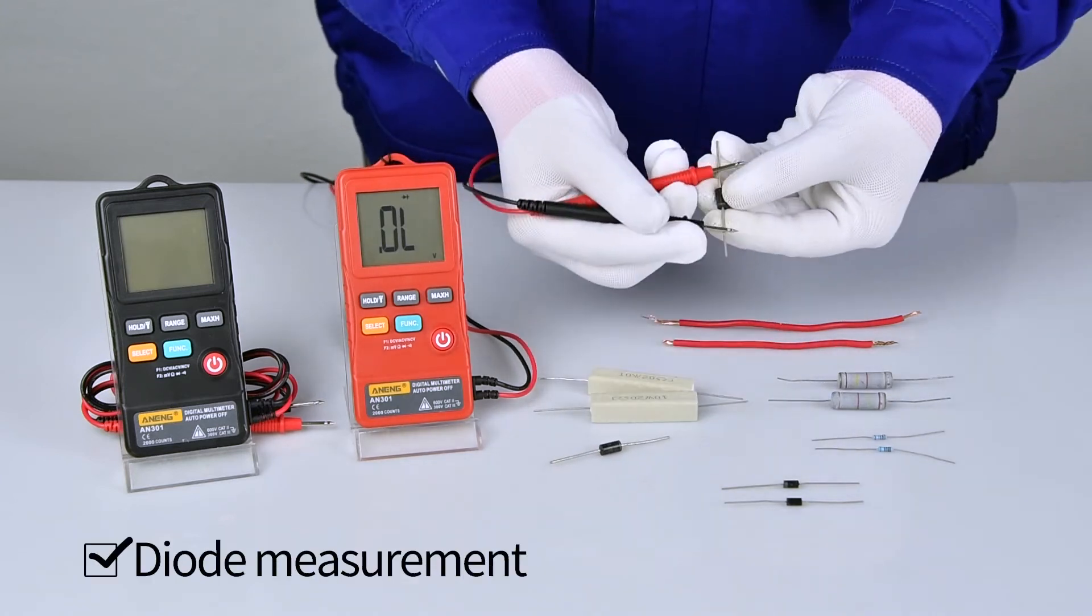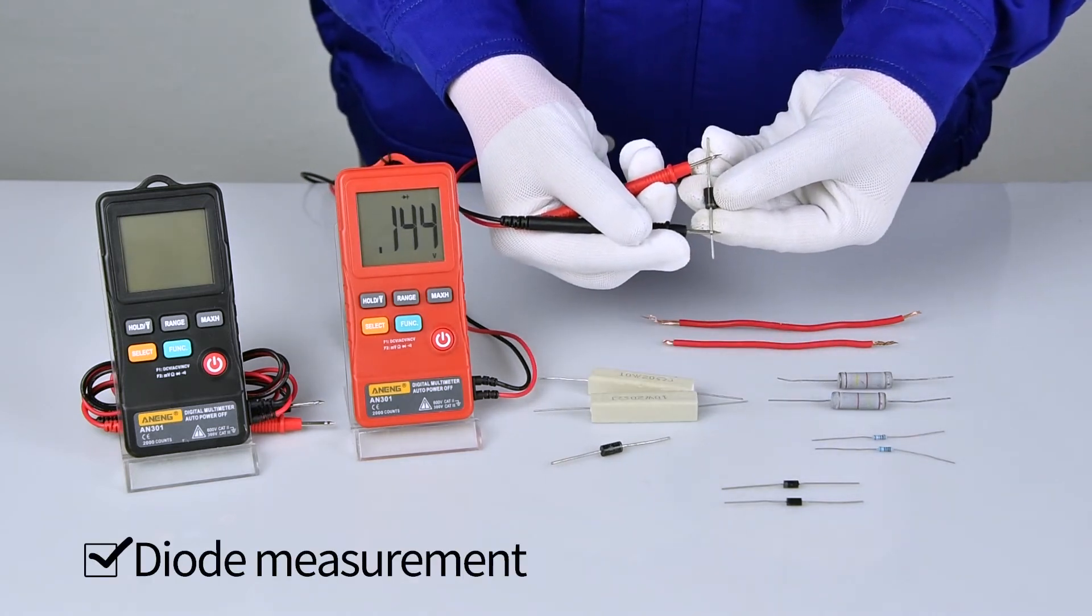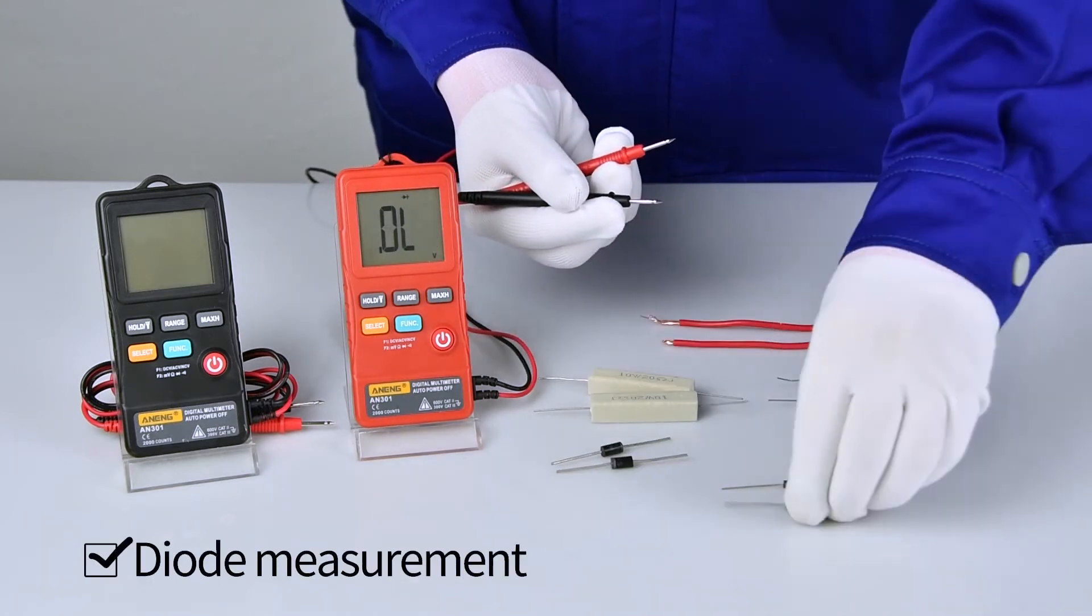Diode measurement. Positive and negative poles need to be aligned.